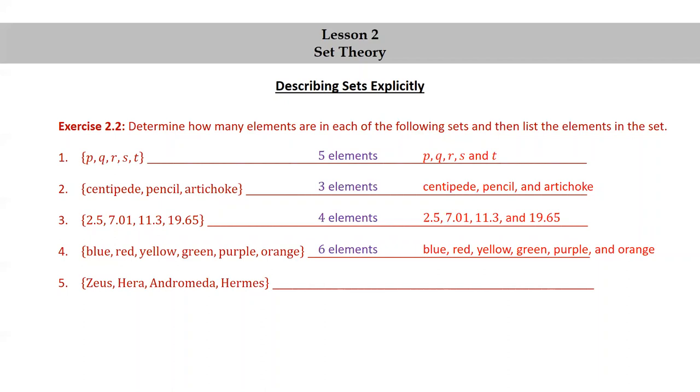Set of Zeus, Hera, Andromeda, Hermes has four elements: Zeus, Hera, Andromeda, and Hermes.